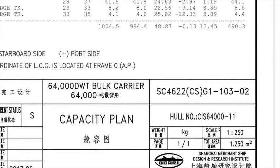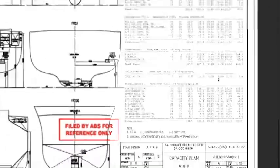The scale of this plan is 1:250, meaning one unit on this plan equals 250 units on the actual vessel. To make it easier: if you measure 1 mm of length on this plan, it equals 250 mm on the actual ship.